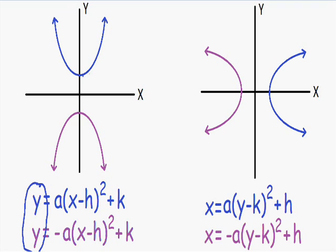I graphed one pointing up and one pointing down. To know which direction it points, we look at the letter A — the constant in front of the parentheses. If the constant is positive, it's going to open in the upward direction. That's why the blue equation and blue graph are pointed upward. If the A constant is negative, it's going to be pointed downward — that's why the purple equation and purple graph are pointed downward.